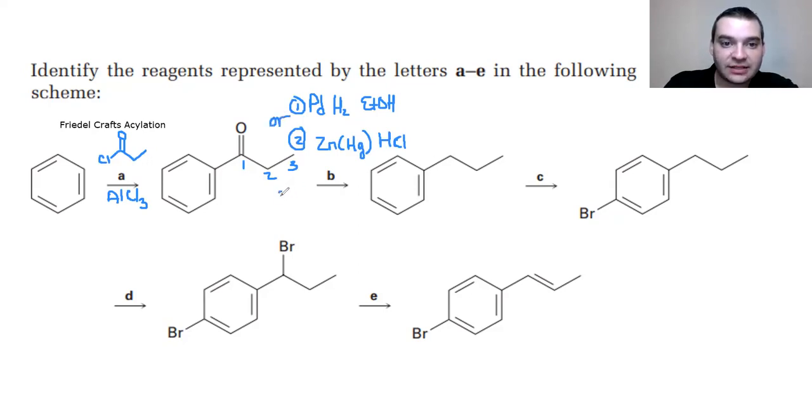The third way that we could do this is a Wolff-Kishner reduction. A Wolff-Kishner reduction, if you remember, is when we have H2NNH2, and we're actually going to make a hydrazone with this compound. And then, in the presence of base and water, this will reduce all the way down to the alkane.